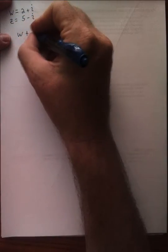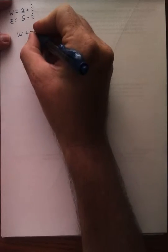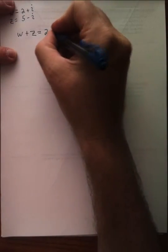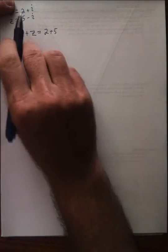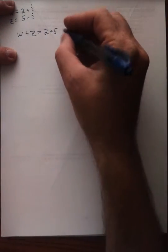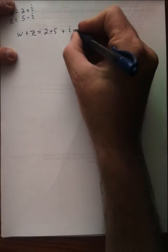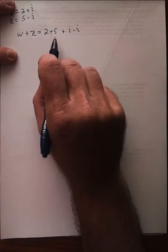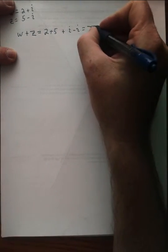With complex numbers, adding is fairly straightforward. To add two complex numbers, W plus Z, you just add the two components. So you add the real component plus i minus i, and then you add the coefficients. Now, i minus i is going to be 0. This is just going to be 7.